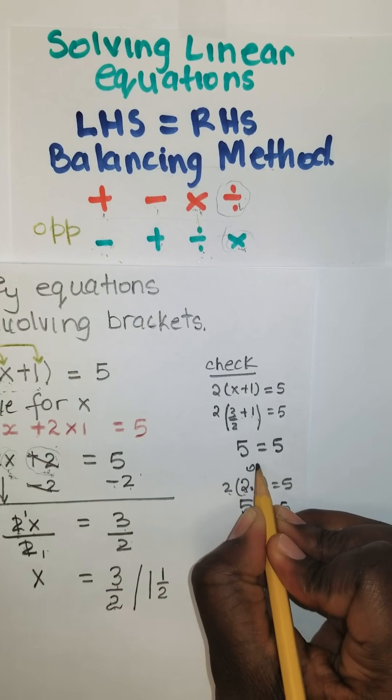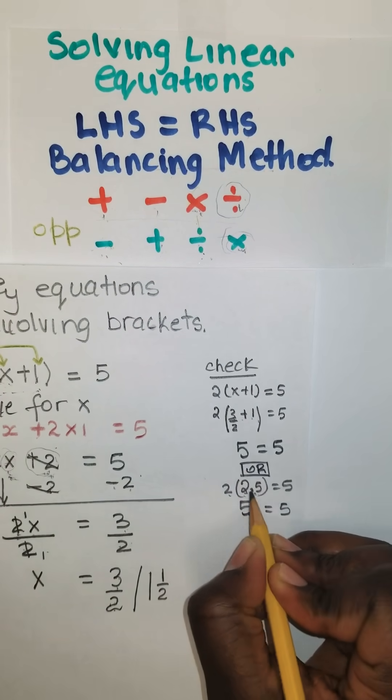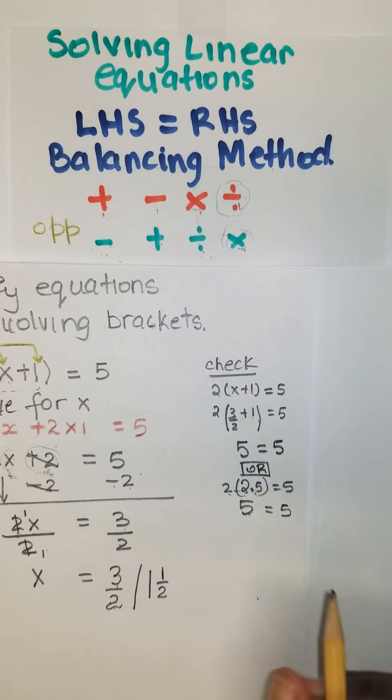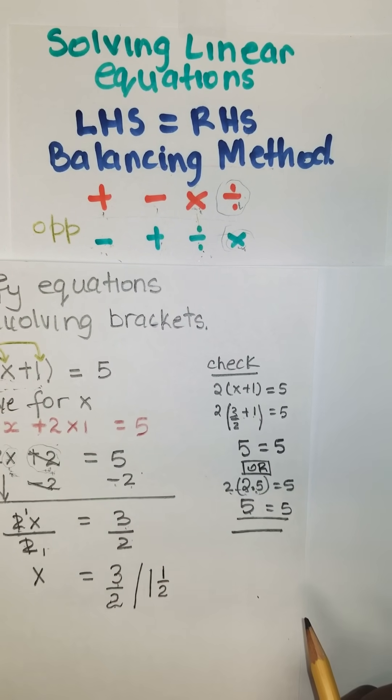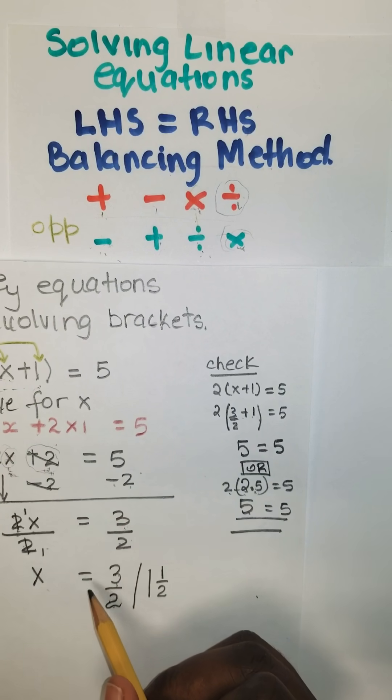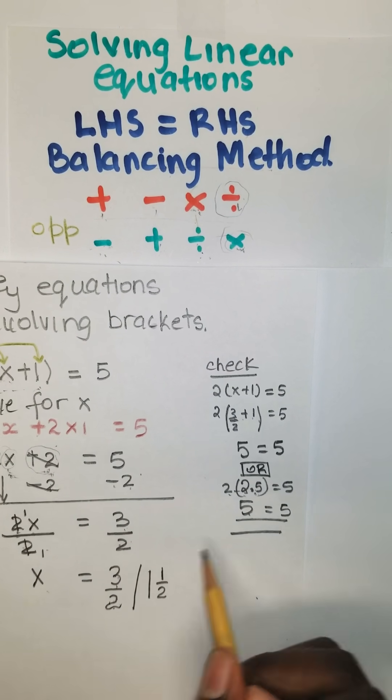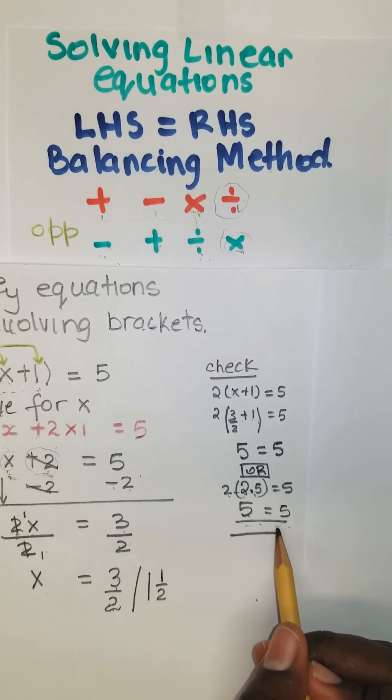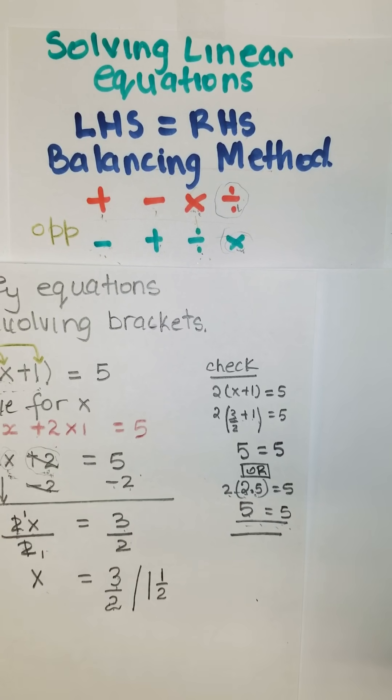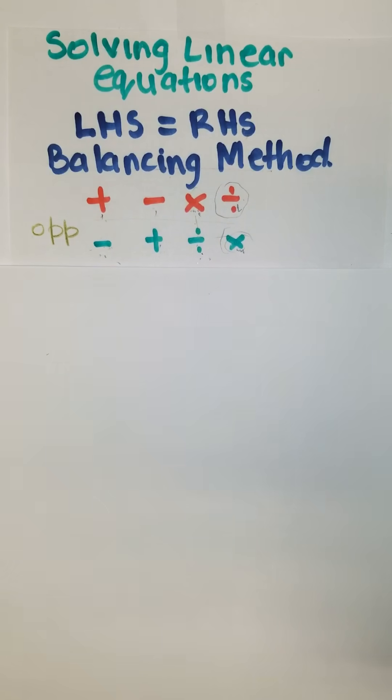So if you don't have a calculator with you, you can always do it this way. So we know it's correct that x is equal to 3 over 2, because at the checking, we see that it is balanced. So let's try another one.